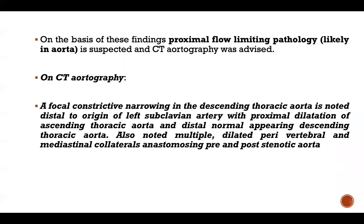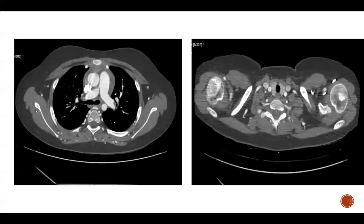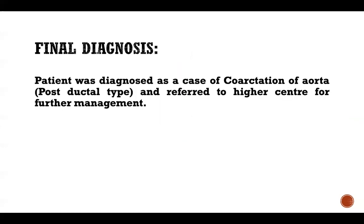On CT angiography, a focal concentric narrowing in the descending thoracic aorta was noted distal to the origin of the left subclavian artery, with proximal dilatation of the ascending thoracic aorta and distal normal-appearing descending thoracic aorta. Multiple dilated perivertebral and mediastinal collaterals were also noted with asymmetric pre- and post-stenotic segments. The patient was diagnosed as a case of coarctation of aorta, post-ductal type, and referred to a higher center for further management on the patient's request.